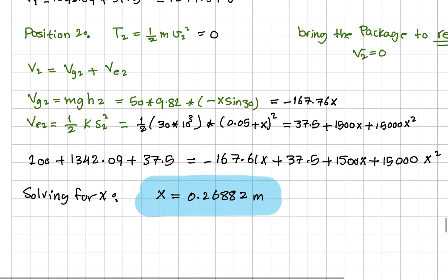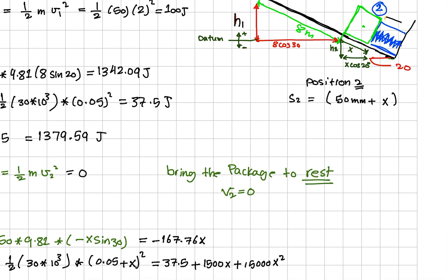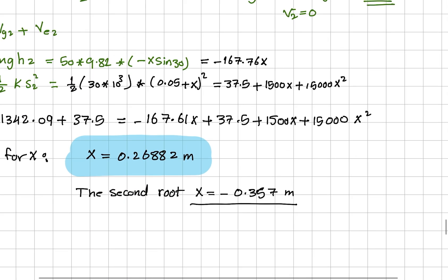And also we have the second root of x. This one, the second root, does not represent the physical situation since the positive x is measured downward.